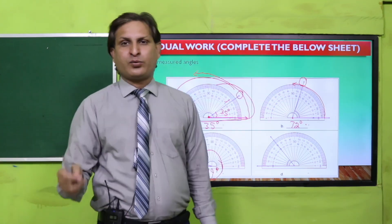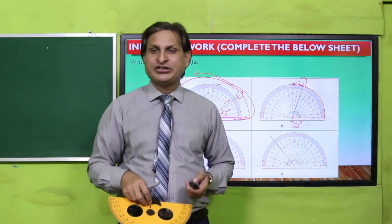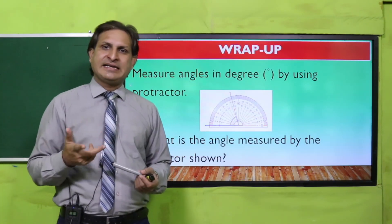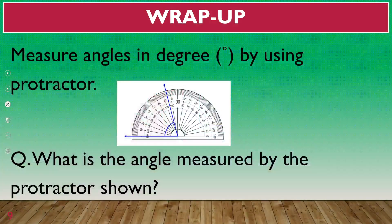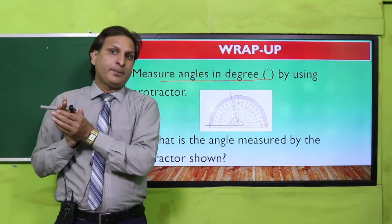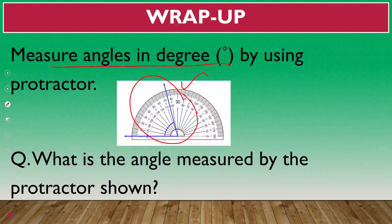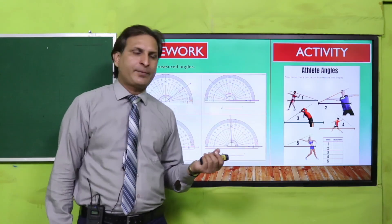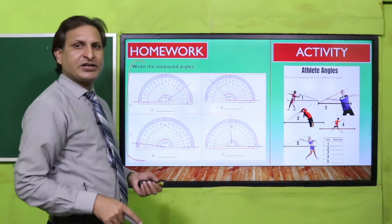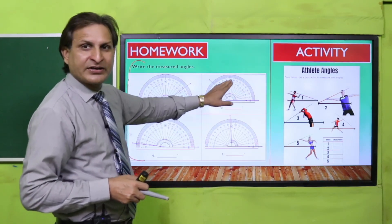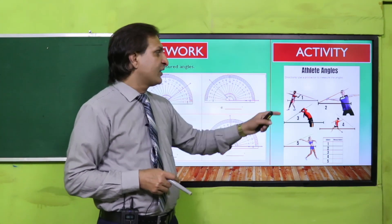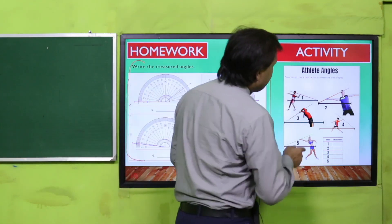Isi tarah agla part aapne khud solve karna hai aur solve karne ke baad apni teacher ko yeh worksheet submit karwa deni hai. Students, ab aayein wrap-up ki taraf. Aaj ke lesson mein humne kya dekha — hamaara aaj ka lesson tha: measure angles in degrees by using protractor. Ek angle hai isko measure karein use your protractor. Ab worksheet ki taraf — homework mein aap logon ne yeh worksheet complete karni hai, angle ki reading dekhni hai ki protractor ke saath kaun sa angle hai. Given angles ko measure karna hai aur unki value likhni hai.